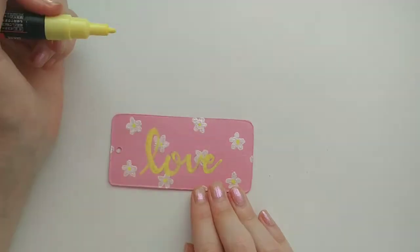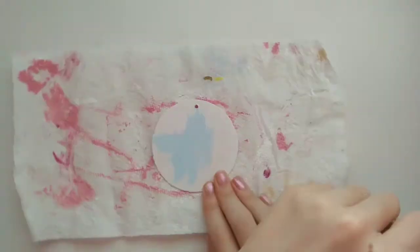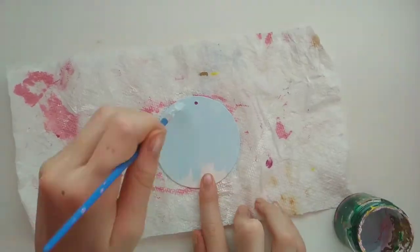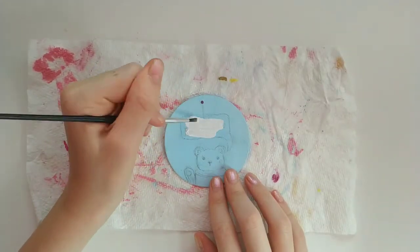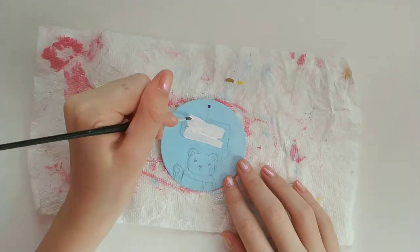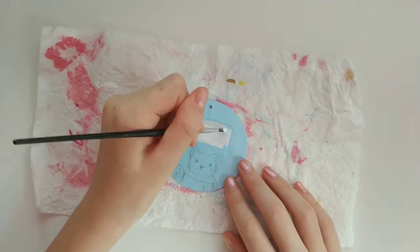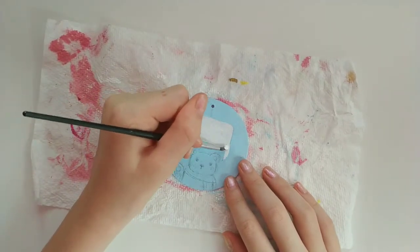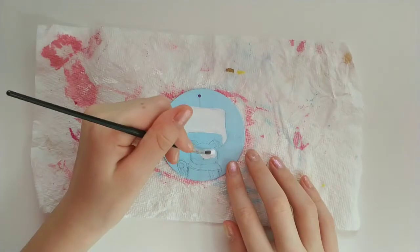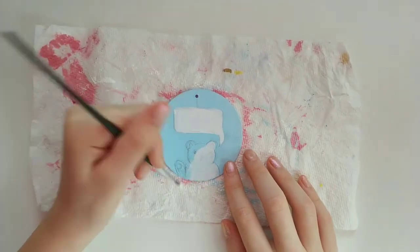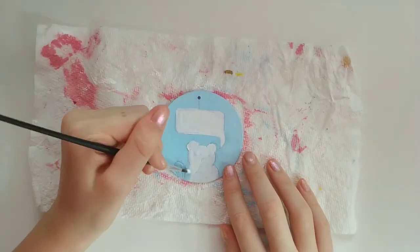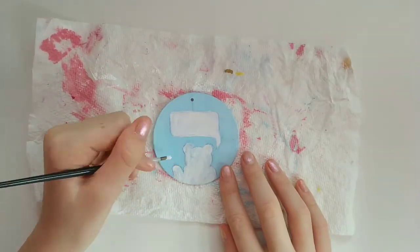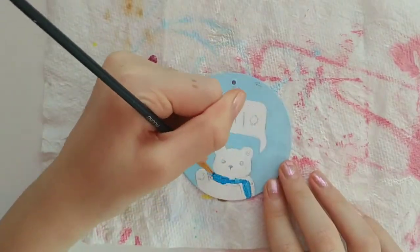On to the second one, which is the circle. For this one I decided to go with a base color of light blue, and then I decided to draw one of my newer characters, Snowball, on it saying hello. So I just filled in all of the white spaces and then I went in for the details.